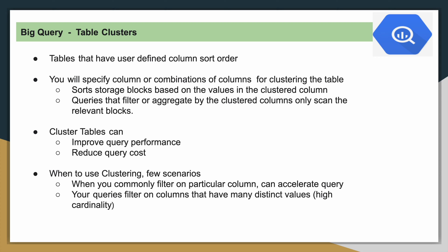For example, if you are defining a BigQuery table cluster on multiple columns - let's say A, B, C - while applying the filter you will have to make sure that you are following that order. At least you will have to mention the first column in that order in order to take advantage of table clustering, otherwise it would not work. The main goal of table clustering is to improve query performance and also reduce query cost.